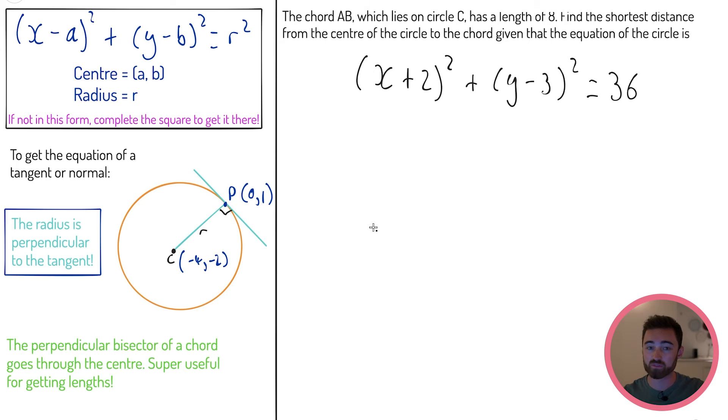The last super useful bit of information is the following: the perpendicular bisector of a chord goes through the center of a circle. That might be quite confusing right now, quite a lot to take in. What I'm going to do is read through this question, draw a diagram, and you're going to see how it will absolutely sort you out.